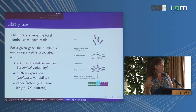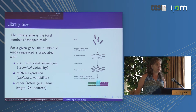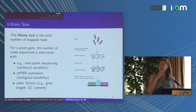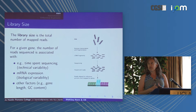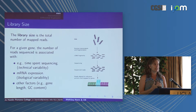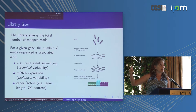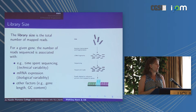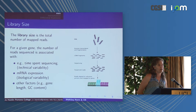Thinking about variability: the library size is the total number of mapped reads in a sample. For a given gene, the number of reads mapped to that gene can vary for lots of reasons — how long the sample spends in the sequencer, ambient temperature, and other technical variability pieces. We certainly don't want to say a normal sample has higher expression than a tumor sample simply because we left it in the machine longer.